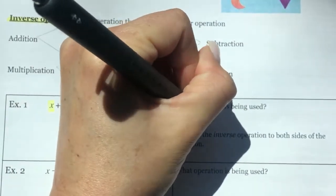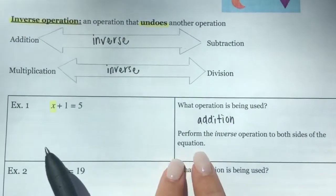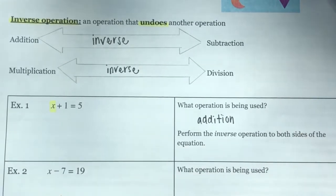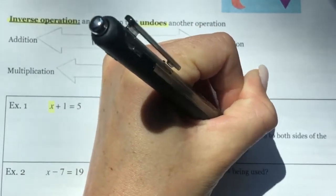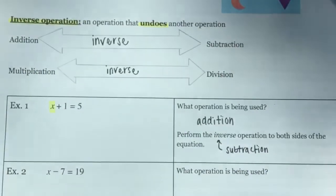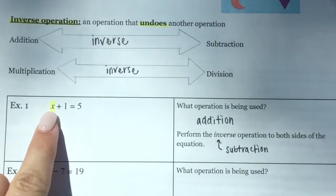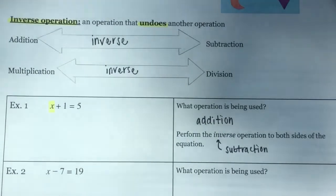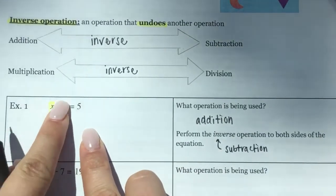We need to perform the inverse operation to both sides of the equation — that part is very important. Since the operation in the equation is addition, the inverse is subtraction. Specifically, 1 is being added to X, so the inverse would be subtracting 1. If we think of this equation as a balance or scale, the left side has to equal the right side.